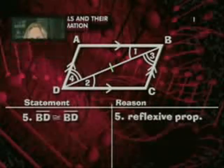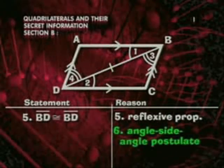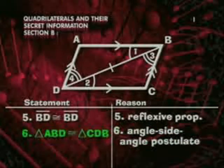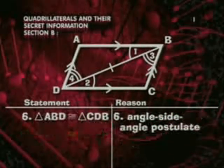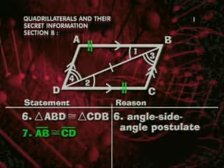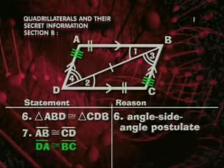Now we can use the angle-side-angle postulate to say that triangle ABD is congruent to triangle CDB. Since the two triangles are congruent, we can state that AB is congruent to CD and AD is congruent to BC.